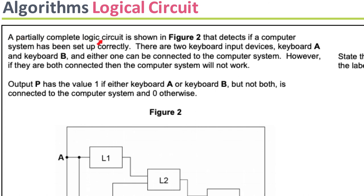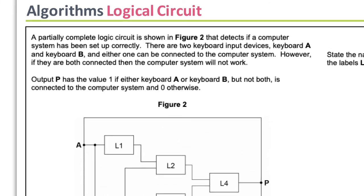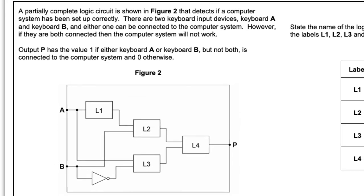A partially completed logic circuit is shown — it detects if a computer has been set up correctly. There are two keyboard input devices: keyboard A and keyboard B. Either one of them can be connected to the computer system.